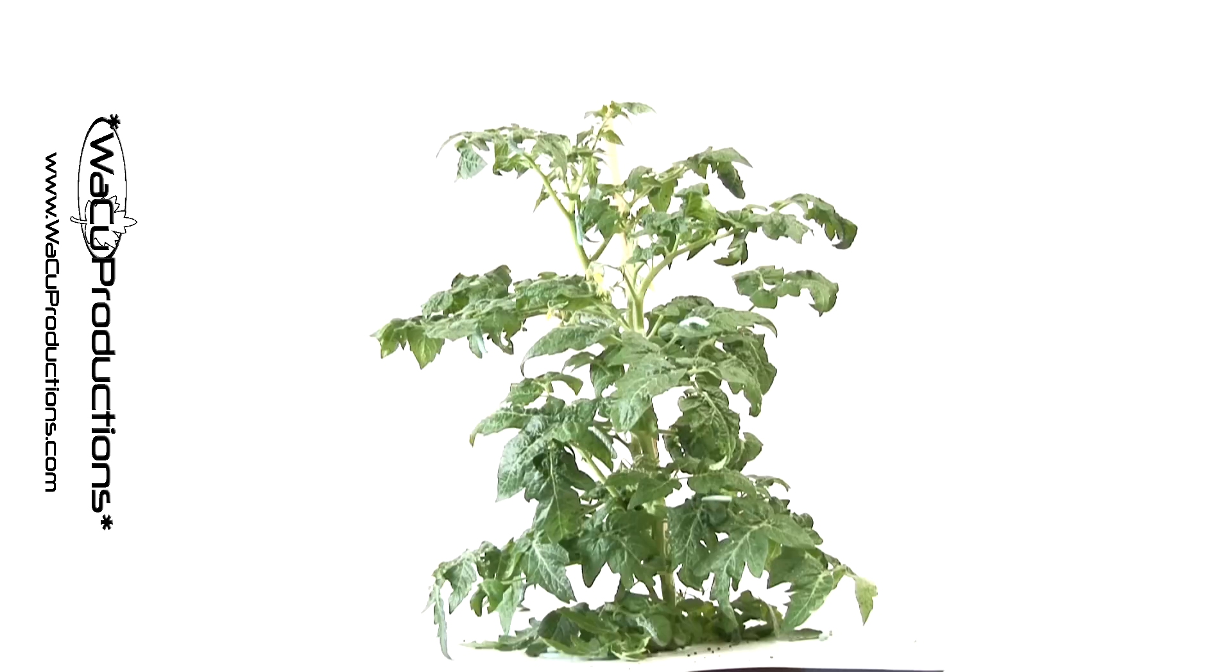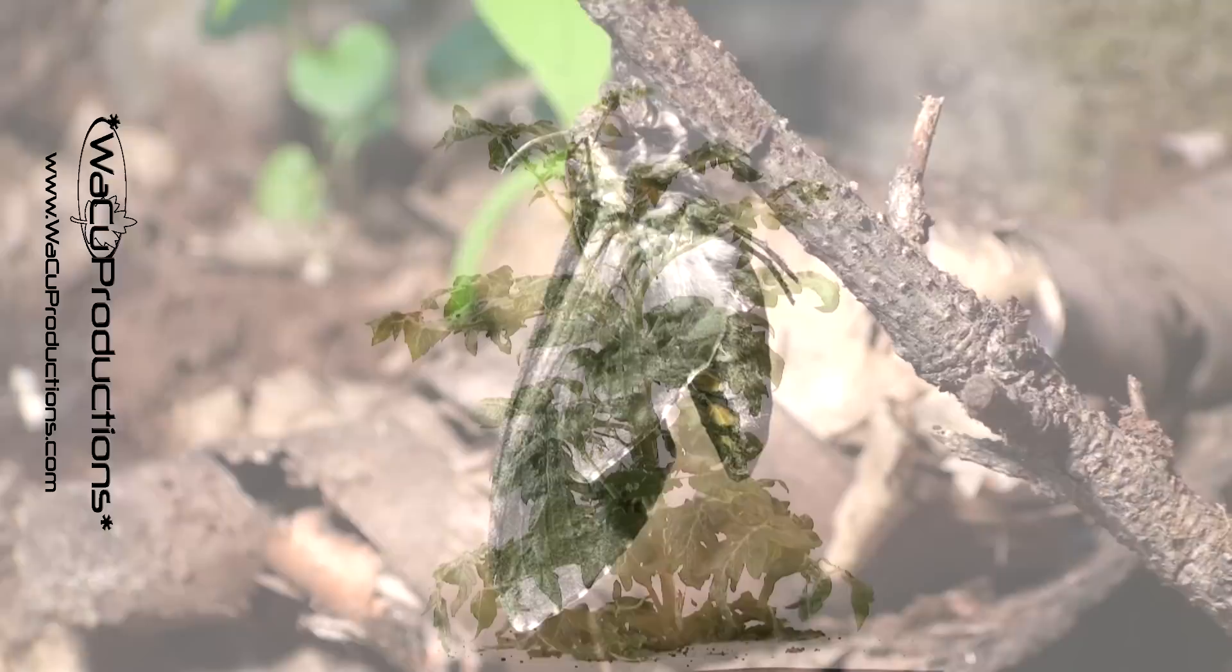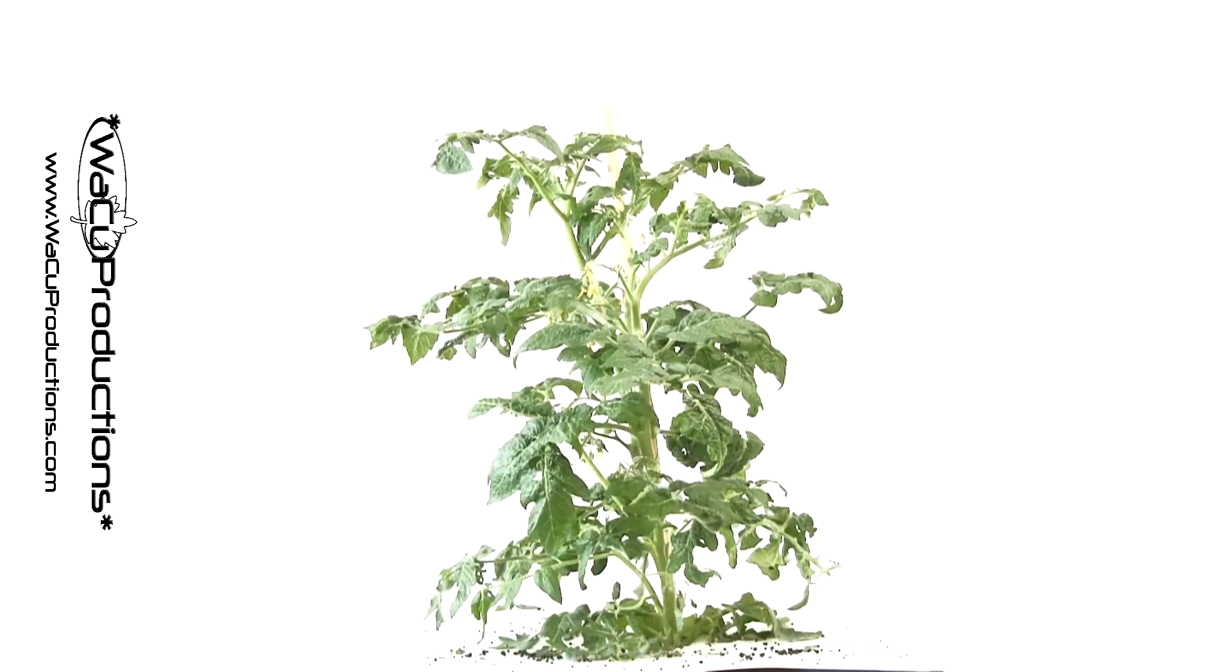The hornworm is the larva of the five-spotted hawk moth. As the larva, its job in the life cycle of this species is essentially to eat, and eat it does.